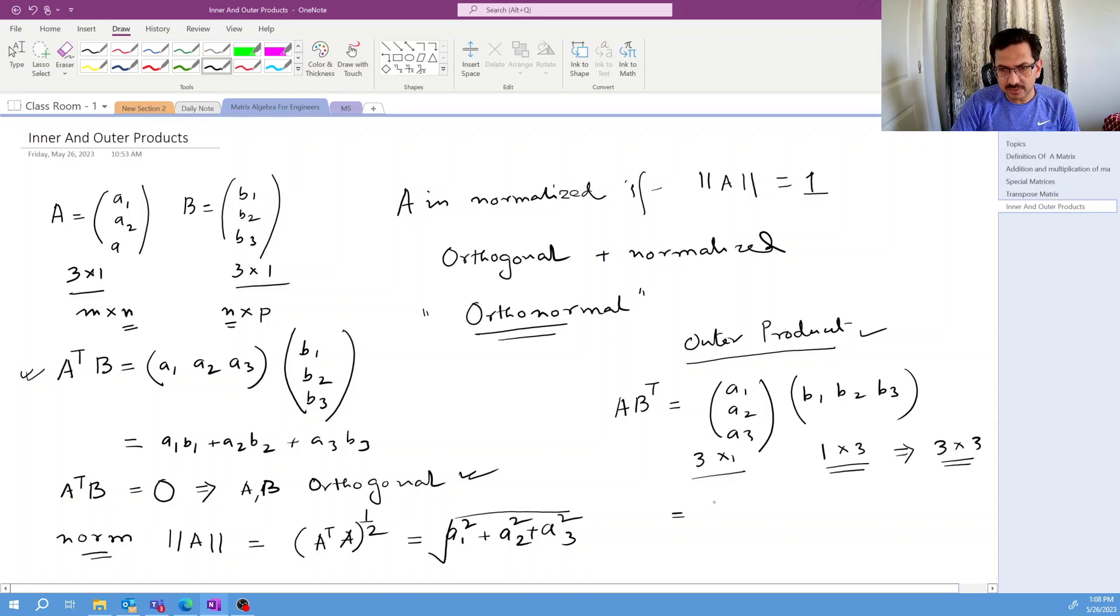So what will be the result of this one here? So again, it is basically a1, so basically we will go by this: a1 b1, a1 b2, a1 b3, now a2 b1, a2 b2, a2 b3, and a3 b1, a3 b2, a3 b3. So basically here we are getting a bigger matrix when you are doing the outer product of two vectors.